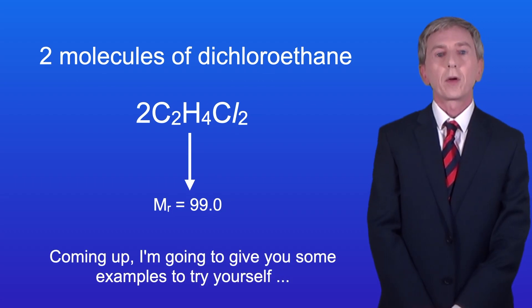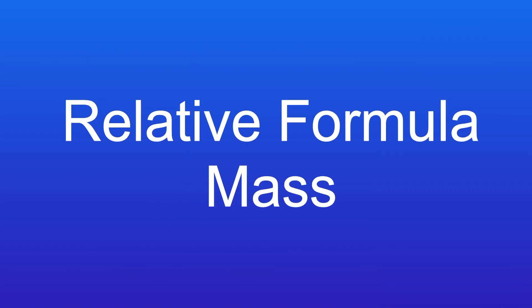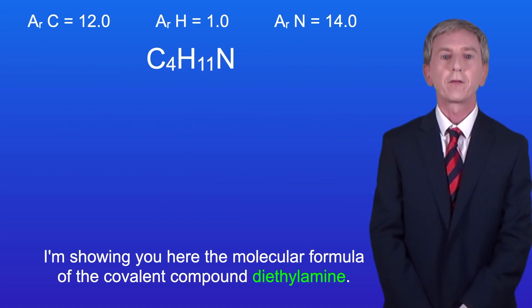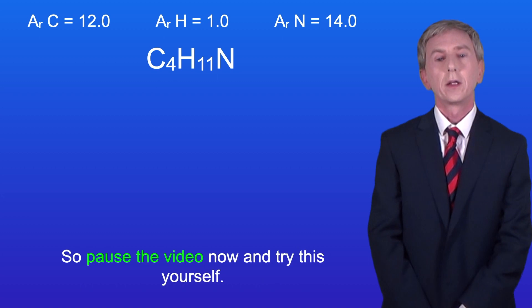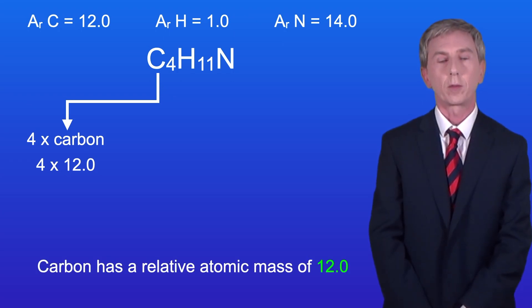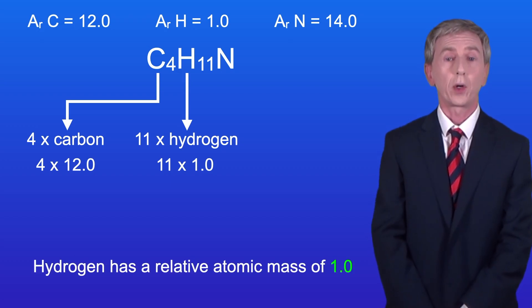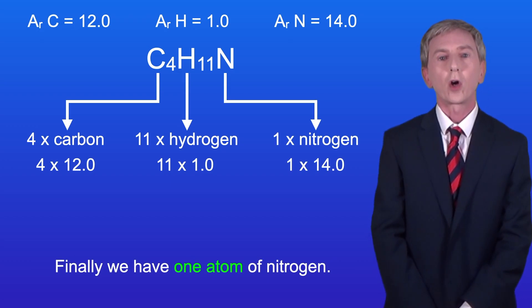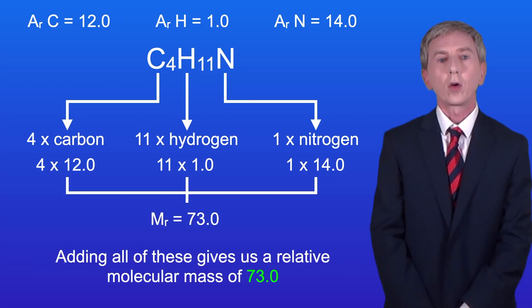I'm showing you here the molecular formula of the covalent compound diethylamine and I'd like you to work out the relative molecular mass of this compound. Pause the video now and try this yourself. We've got four atoms of carbon with a relative atomic mass of 12.0, eleven atoms of hydrogen with a relative atomic mass of 1.0, and one atom of nitrogen with a relative atomic mass of 14.0. Adding all of these gives us a relative molecular mass of 73.0.